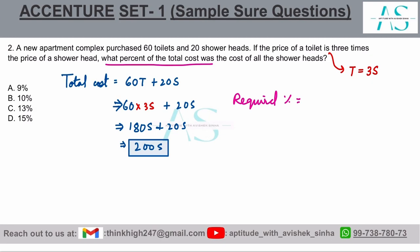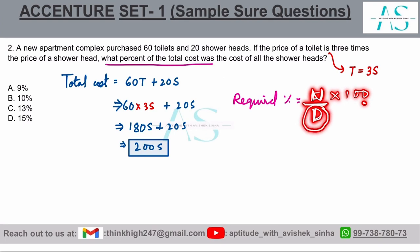For percentage calculation you need a fraction multiplied by 100, with a numerator and denominator. I will find both and multiply by 100 to get the required value. Certain keywords help identify the denominator — such as: of, on, than, from, to, with respect to, as compared to.